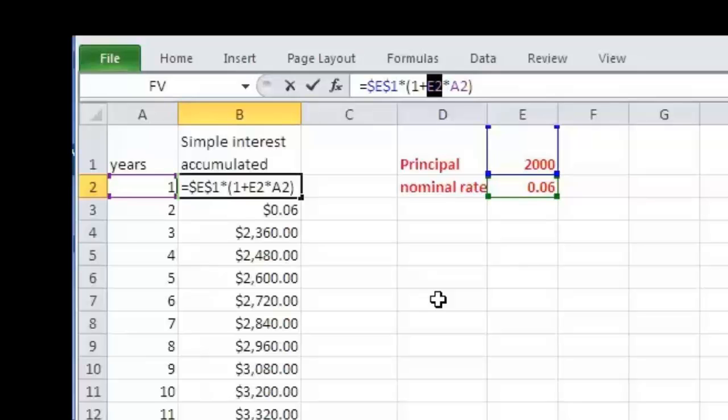But Excel has another shortcut that allows you to do that, and that is hitting the key F4. So watch what happens when I hit the key F4. You notice Excel took the cell reference and put a dollar sign in front of the column, and a dollar sign in front of the row.